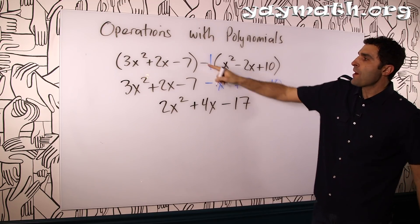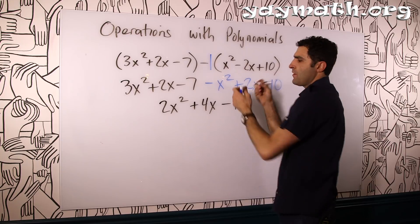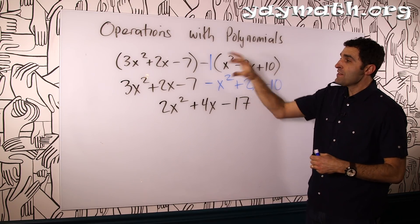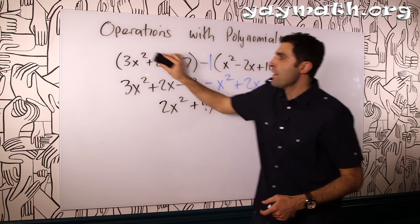Distribute the negative through. Other problems will have a plus here. No problem, you just add all the like terms. Not every problem is so friendly. Sometimes they have us multiplying polynomials. We're going to do that now.